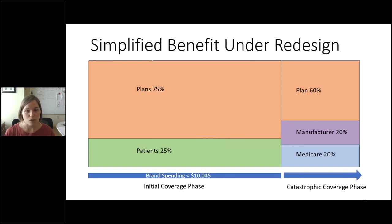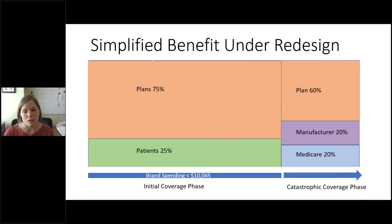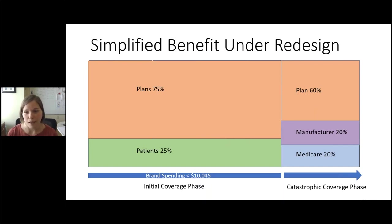The redesigned proposal is really focused on a very streamlined benefit from the patient perspective. 25% coinsurance is the standard benefit design, plans pay 75%, and then you get into the catastrophic coverage phase and patients don't owe any more money. Everybody has a cap on out-of-pocket spending, and then manufacturers, Medicare, and the plans have different responsibilities than they do today.